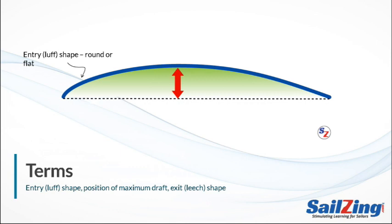This sail has a slightly rounded entry — we'll see some examples on the next slide. Exit shape refers to the trailing edge of the sail, the leech. The leech can be either hooked, flat, or open. Again, we'll show examples on the next slide.